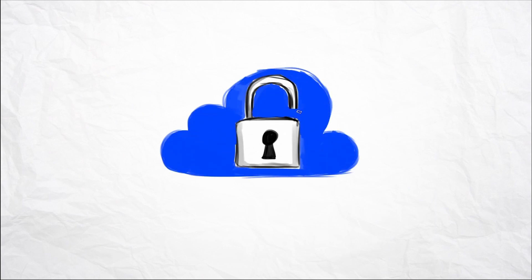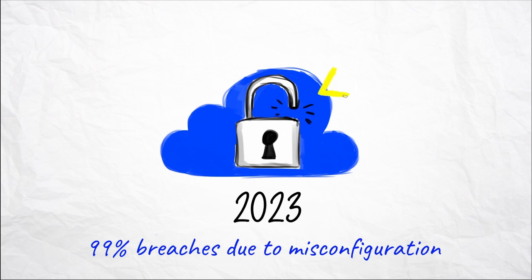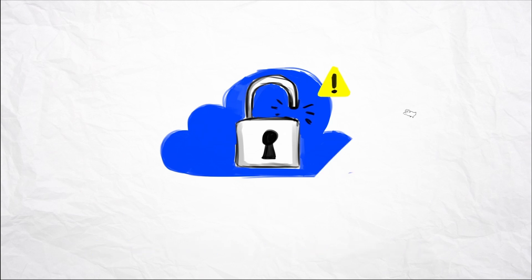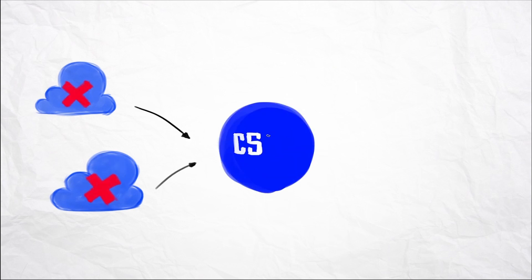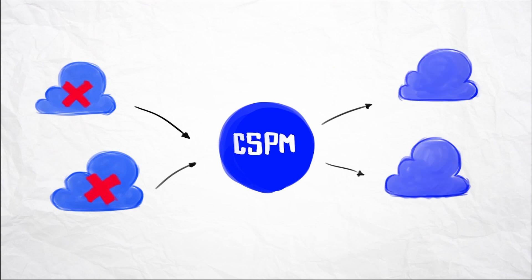Another thing that you must take into consideration is security. Gartner says that by 2023, 99% of cloud security breaches will be due to customers' configuration failures. And by 2024, we will see many organizations implementing security solutions for cloud security posture management to reduce the number of configuration failures.